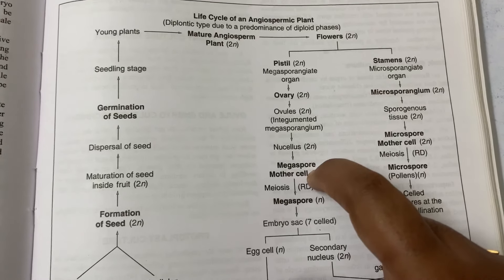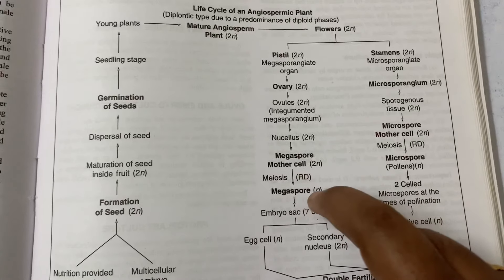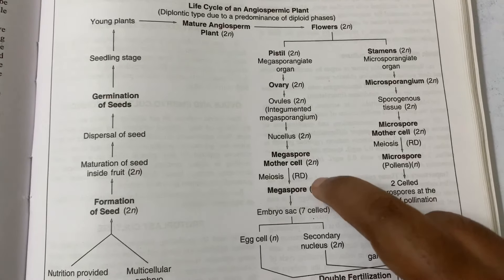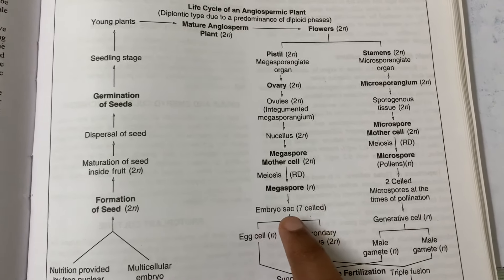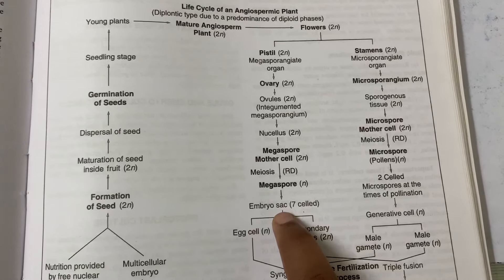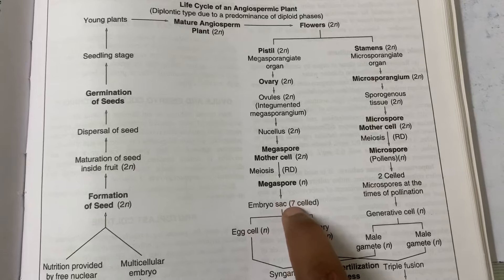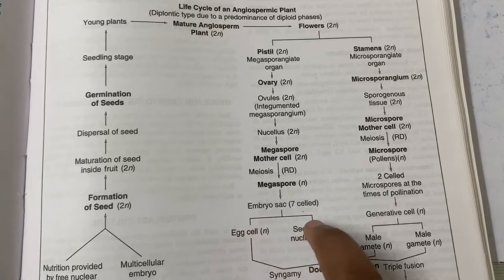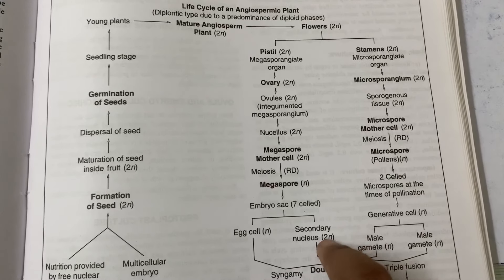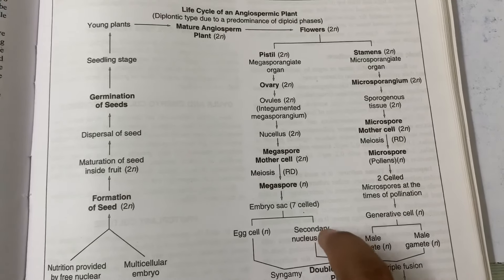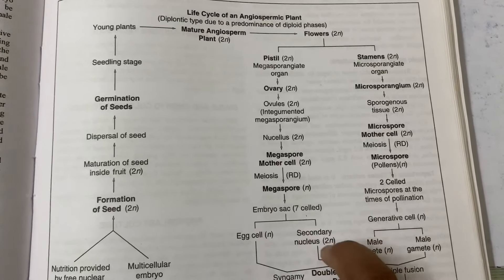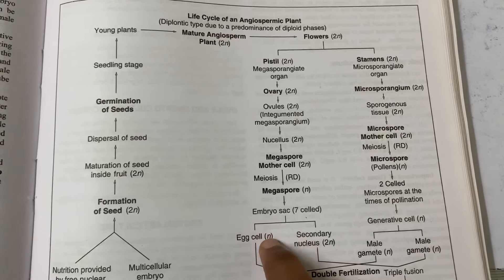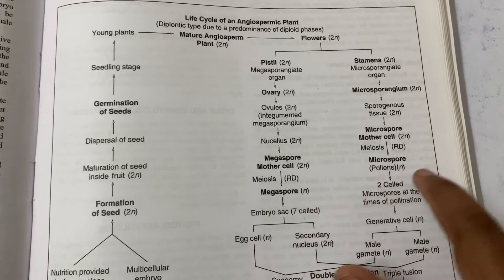The megaspore mother cell undergoes meiosis division and gives rise to the megaspore, which is haploid. The haploid megaspore develops into the embryonic sac with a seven-cell, eight-nucleus stage. Inside the embryonic sac we have the egg cell and the secondary nucleus. The secondary nucleus is diploid in nature because it contains two haploid nuclei together. The egg cell has a haploid nucleus.